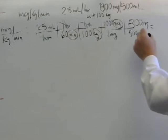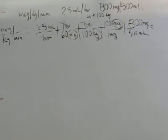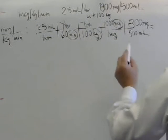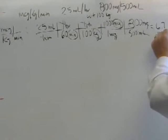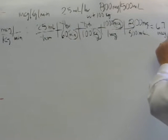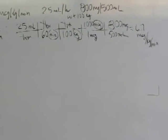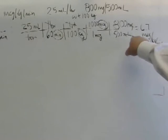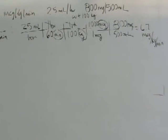Now, by bringing that over, my mls cancel out, my milligrams cancel out, and now I'm left with just the three things I need: one microgram up top, a minute on the bottom, and a kilogram on bottom. And that leaves me with 6.7 micrograms per kilogram per minute. So 6.7 micrograms per kilogram per minute. That's how much drug is infusing when your pump is set at 25 ml per hour.